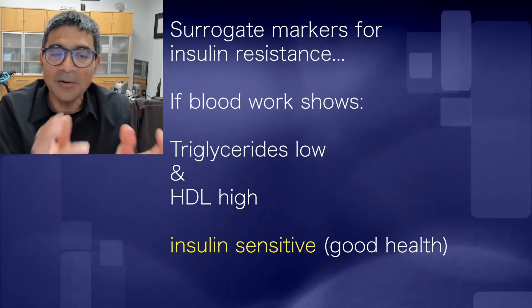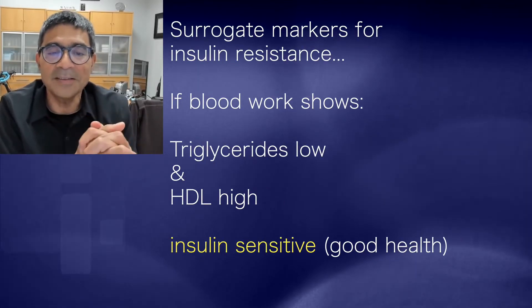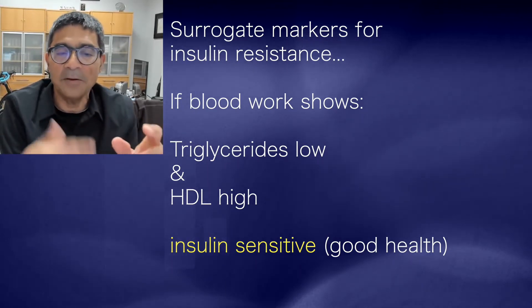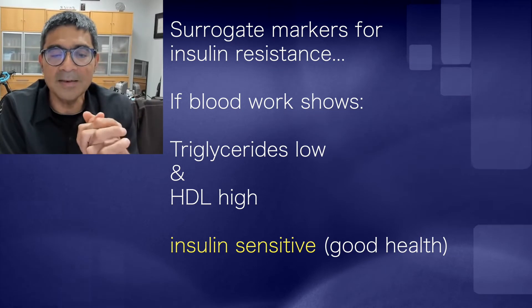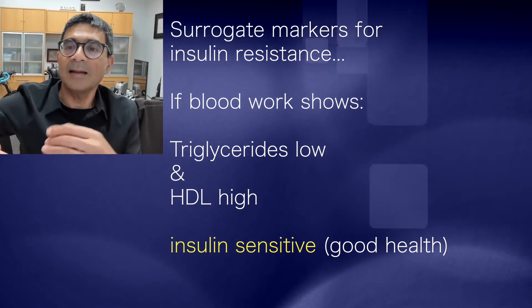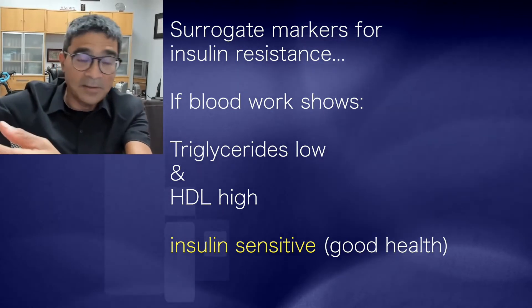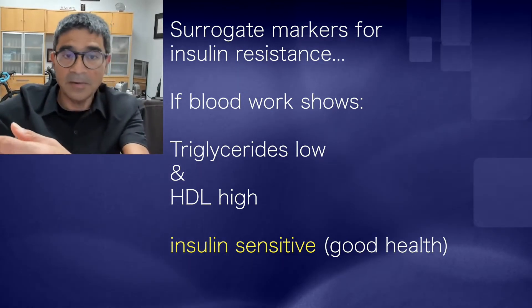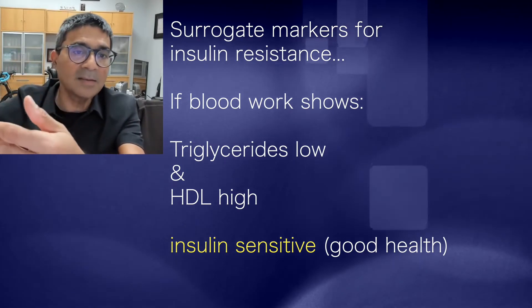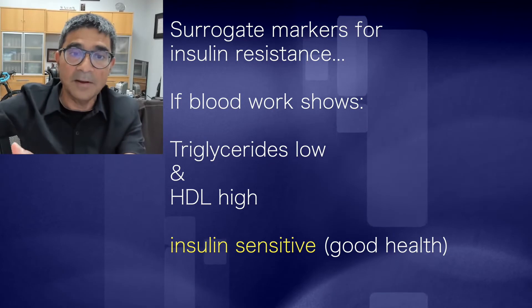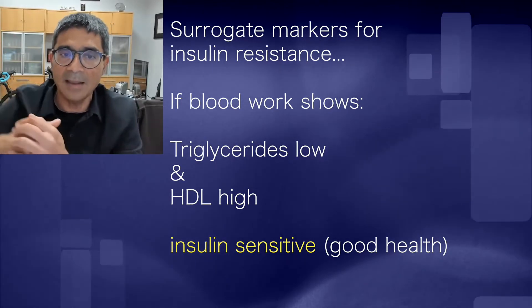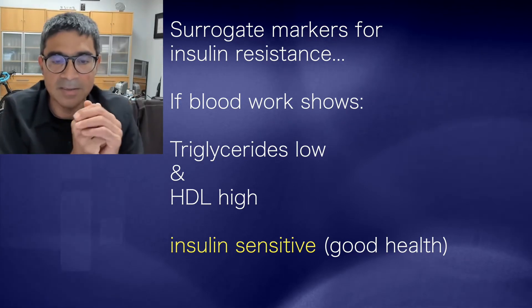You can get surrogate markers of insulin resistance just by looking at a cholesterol profile. If your triglycerides are low and your HDL is high, that means you are insulin sensitive. If your triglycerides are high and your HDL is low, that means you are potentially insulin resistant.